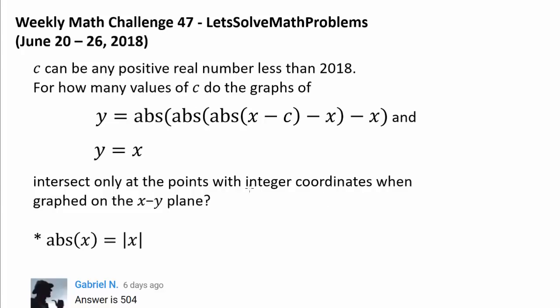We have lots of absolute value signs showing up, and naturally having too many absolute value signs makes this equation harder to work with. So we should try to get rid of the absolute value signs. How can we make absolute value signs disappear?